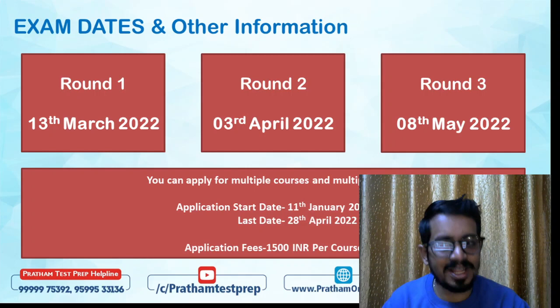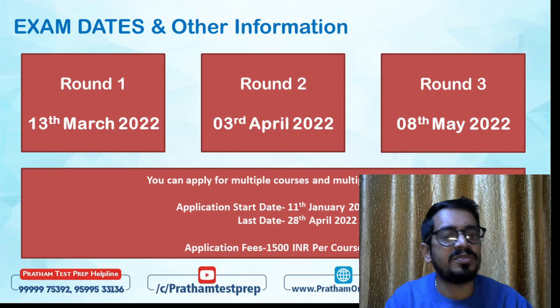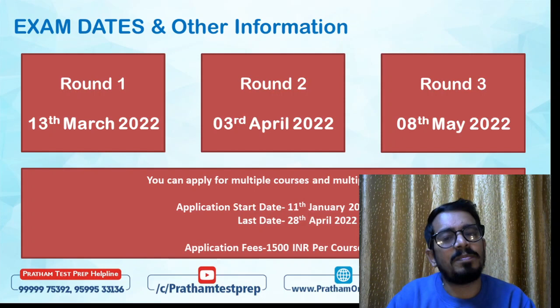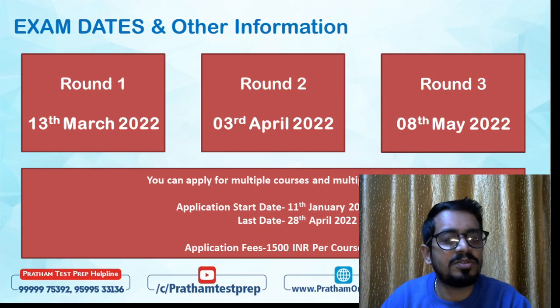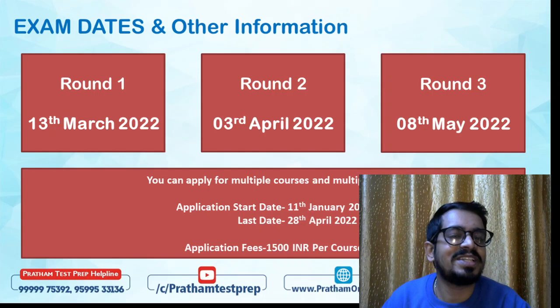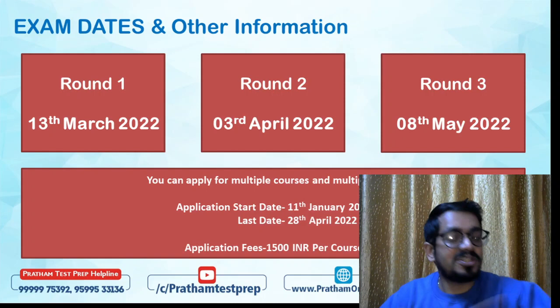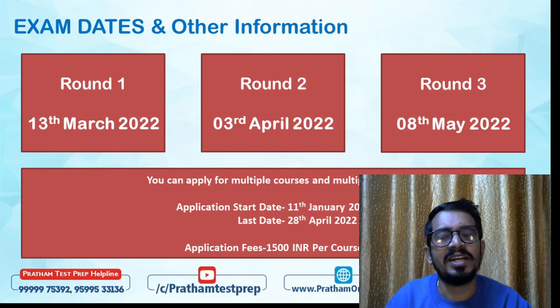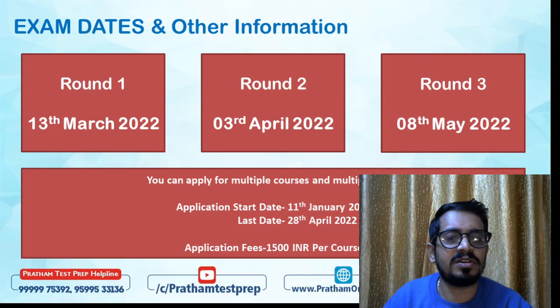This next part is very important and confuses many students. Christ University has three rounds — Round 1, Round 2, Round 3 — but these are not sequential elimination rounds. They are simply three exam cycles. Round 1 is on 13th March 2022, Round 2 is on 3rd April 2022, and Round 3 is on 8th May 2022. You can choose to apply in any one or multiple cycles, even for different courses on different dates.